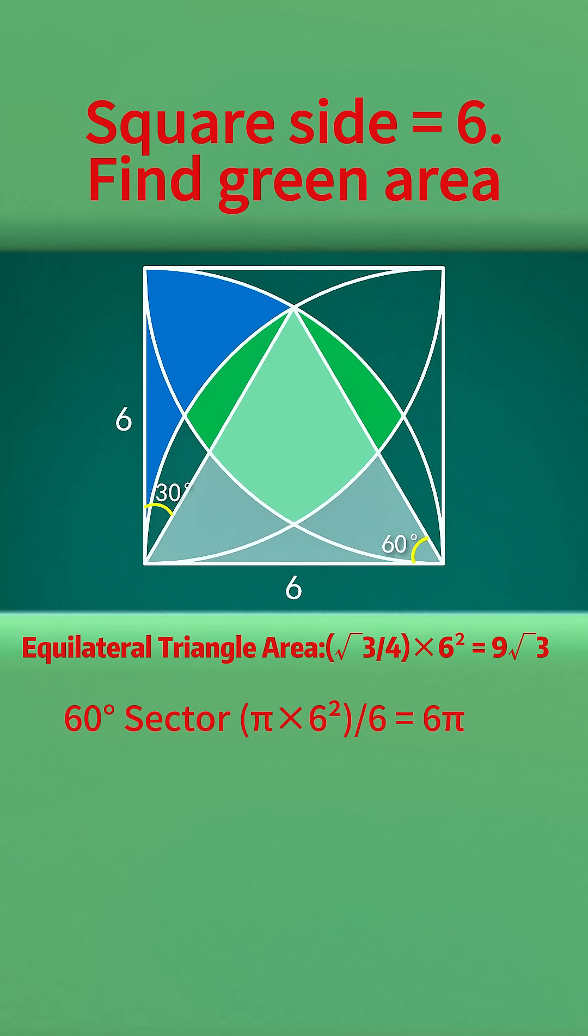The area of the 60 degree sector is one-sixth of the total area equals 6 times pi. So the area of the segment equals 6 times pi minus 9 times square root of 3.